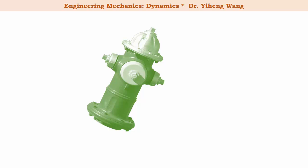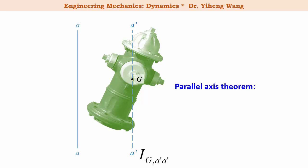Similar to area moment of inertia, the parallel axis theorem also applies to mass moment of inertia. If there is an axis passing through the mass center point G, and we know the mass moment of inertia about that axis is I_G (a-prime a-prime), then the mass moment of inertia about another axis a-a parallel to it is I_aa = I_G + m·d², where d is the perpendicular distance between the two parallel axes.